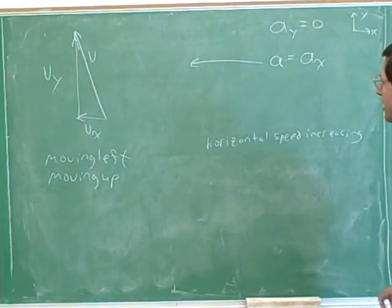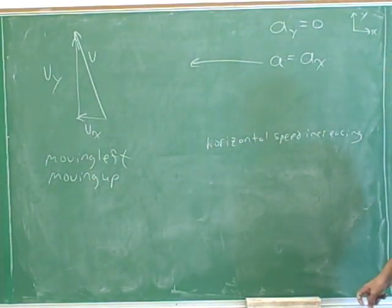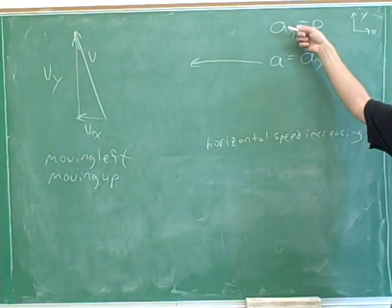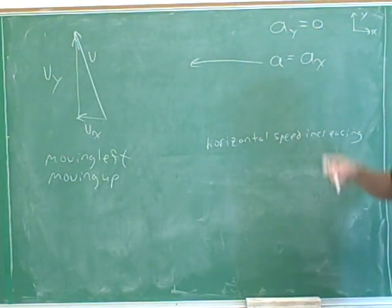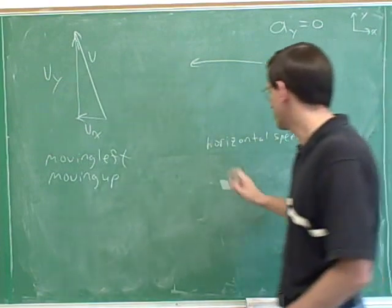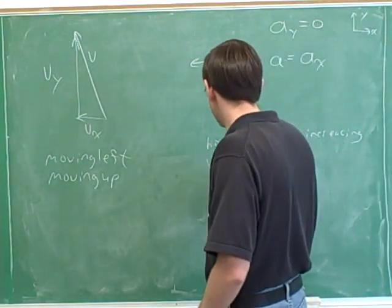How about vertically? We see that we have zero vertical acceleration. That doesn't mean we're not moving — it means the speed isn't changing. So our vertical speed is constant.